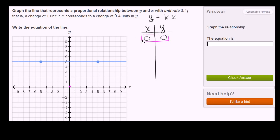Now let's think about what happens as we increase x. So if x goes from 0 to 1, we already know that a change of one unit in x corresponds to a change of 0.4 units in y. So if x increases by 1, then y is going to increase by 0.4.